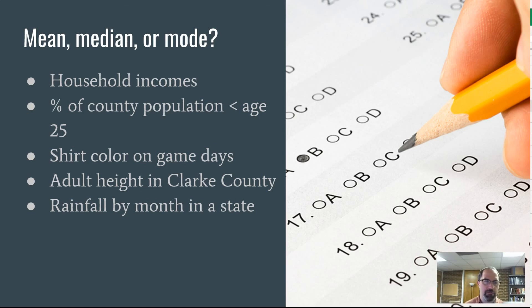So here's what I'm going to ask you to do. I'm going to ask you to take a minute. This is five different variables: household income, percent of the county population that's less than age 25, shirt color on game days if you were walking through UGA campus, adult height in Clark County, and rainfall by month in a particular state. I would ask you to think about what's the appropriate measure of central tendency for each of these five points. Take 30 seconds, jot down some notes, and then we'll go over them.